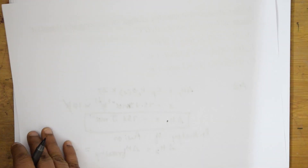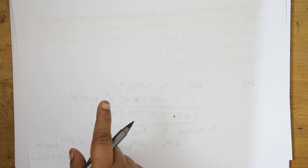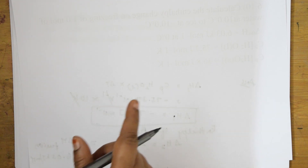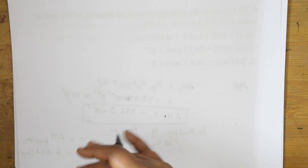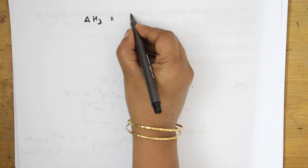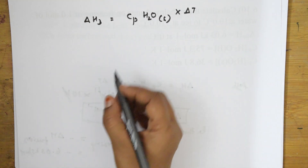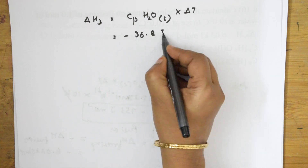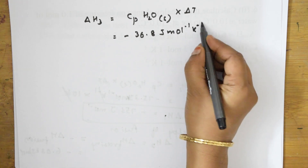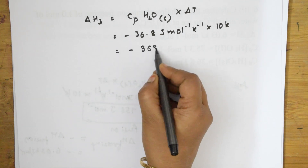Step 3: enthalpy change for conversion of one mole of ice at 0°C to one mole of ice at −10°C. ΔH₃ = Cp(H₂O solid) × ΔT = −36.8 J mol⁻¹ K⁻¹ × (−10 K), giving ΔH₃ = 368 J mol⁻¹.